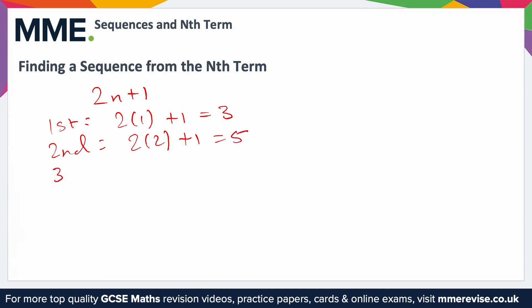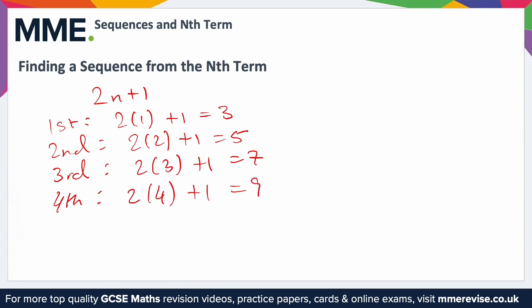The third term: we substitute 3 in, so 2 lots of 3 is 6, plus 1, so 7. The fourth term: we substitute 4 in, so 2 lots of 4 is 8, plus 1, gives us 9. There's also a little trick you can do here.